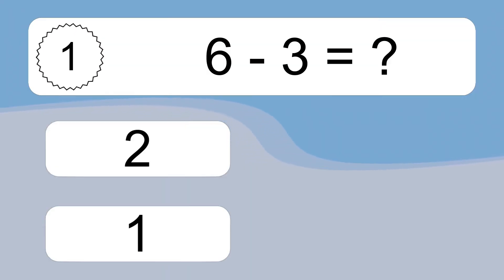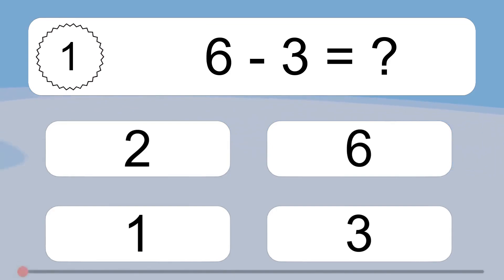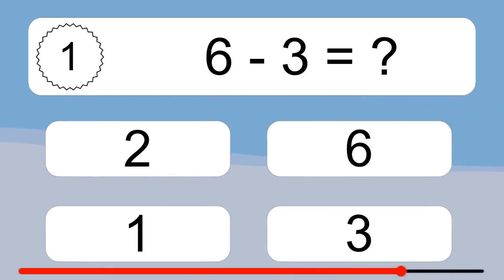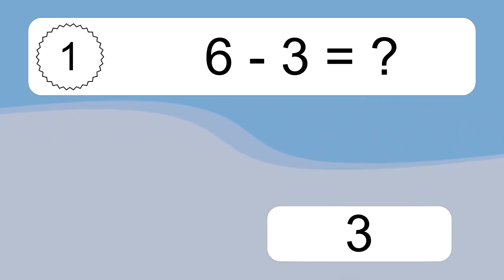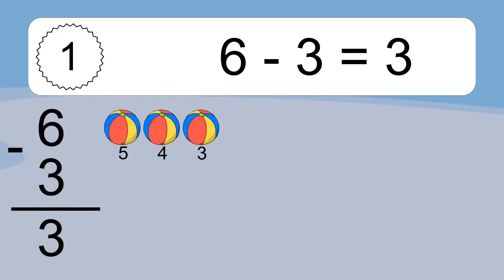6 minus 3 equals what? 6 minus 3 equals 3. Let's count it: 5, 4, 3.